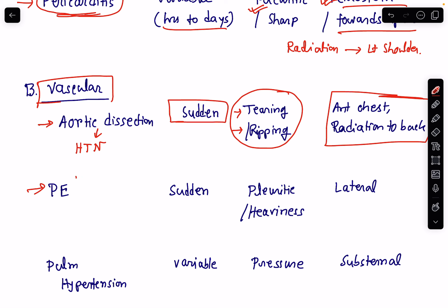Next vascular cause is pulmonary embolism. Embolism is a sudden phenomenon, so the chest pain will be of sudden onset. The quality will be pleuritic in nature — sharp pain — and there may also be a feeling of heaviness in the chest if the embolism is massive. The location is lateralized, meaning on the side of the pulmonary embolism, the patient will have the pain.